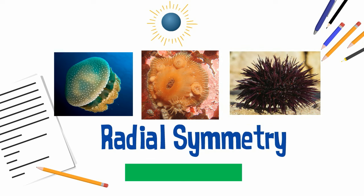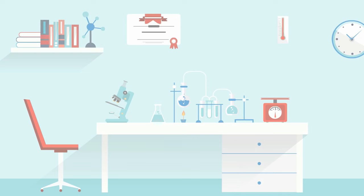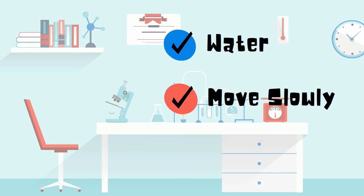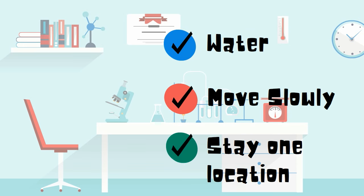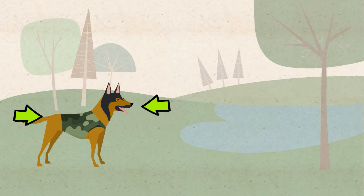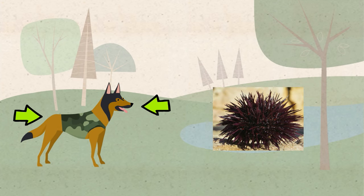They also have several other common characteristics. First, almost all of them live in water. Most of them do not move very fast, and many stay in one spot or are moved along by water currents. Secondly, many of these animals, because they do not have a front or back end, are able to sense their environment in all directions. This way they are ready to grab food coming from any direction.